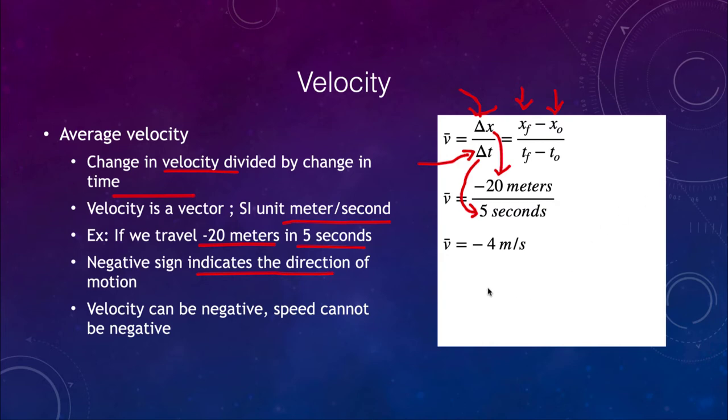So if the positive x direction is positive displacement and velocity, then moving to the left means the negative x direction — and that is all the negative sign tells us. You cannot have a negative speed, but you can have a negative velocity.